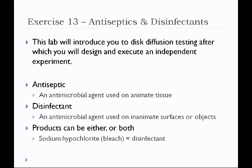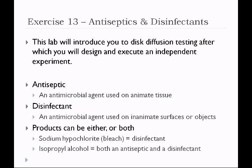Sodium hypochlorite, which is bleach, is only used as a disinfectant and should not be used on living tissue. Isopropyl alcohol, on the other hand, is both an antiseptic and a disinfectant. We can use isopropyl alcohol for disinfecting medical instruments such as thermometers, and we can also use it as a de-germing agent on the skin.